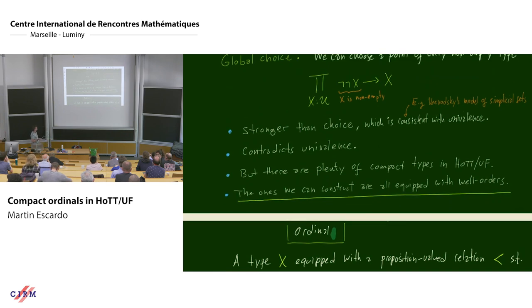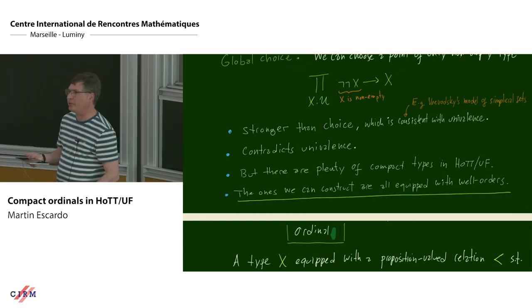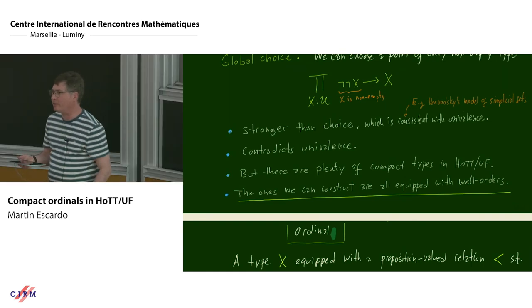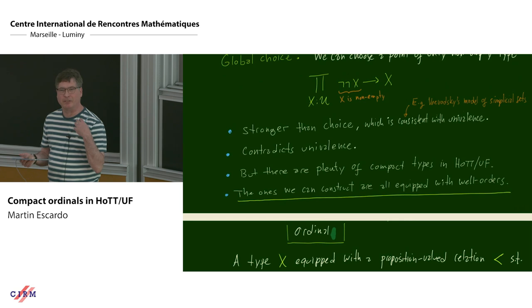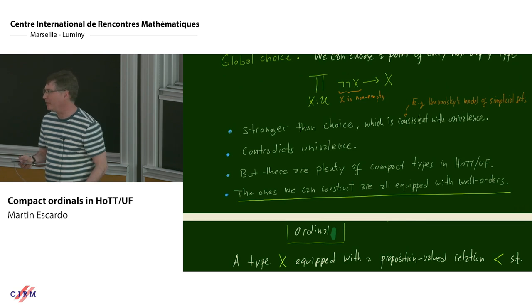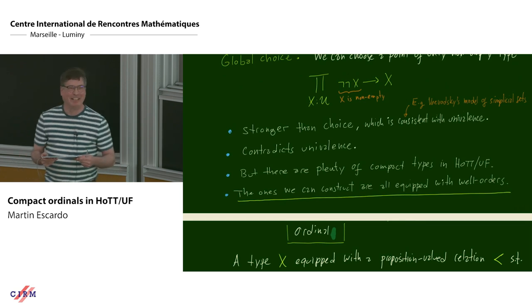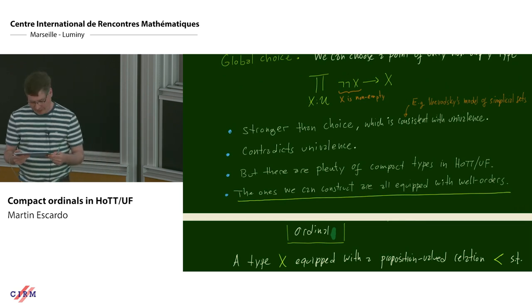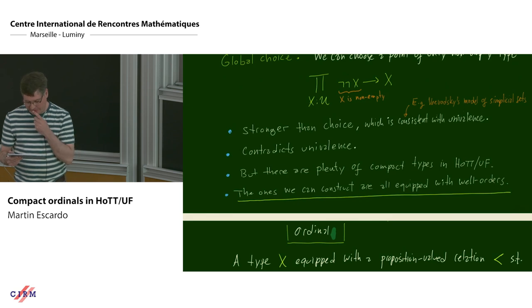Nevertheless there are plenty of compact types. The ones I can construct all turn out to be equipped with well-orders. I cannot actually construct any example which is not well-ordered — normally you have difficulty giving well-orders to things; here I have difficulty not giving well-orders. They arise from the process of construction.